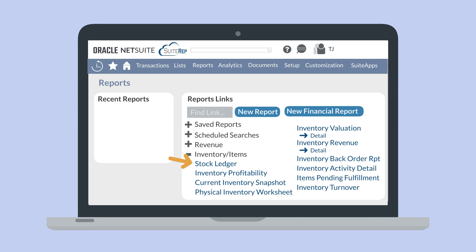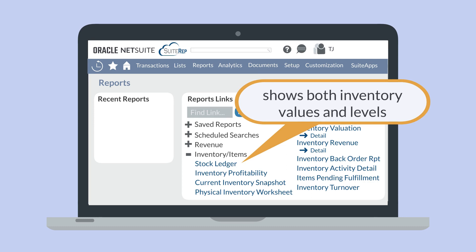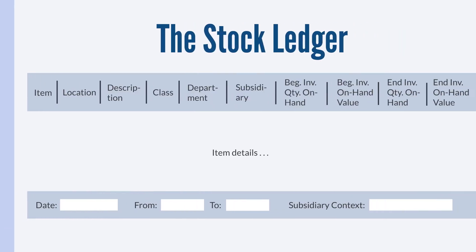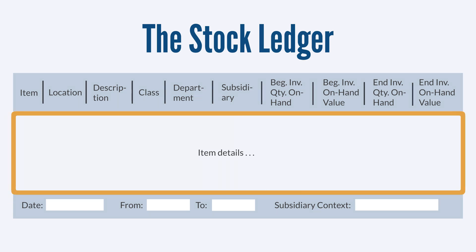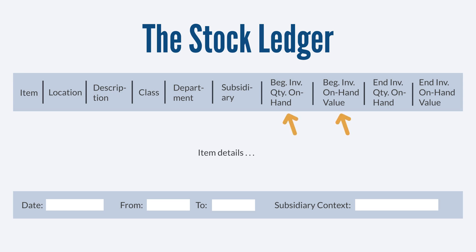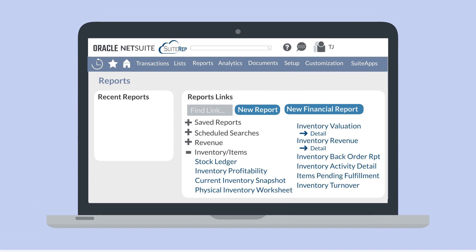First, let's look at the stock ledger. The stock ledger report is important because it's the only report that clearly provides information on both inventory values as well as inventory levels. This report shows the movement of inventory across classes, departments, and subsidiaries over a period of time. On the report, you'll be able to select date ranges and the subsidiary. Then you'll see your list of items in that subsidiary along with information like their beginning inventory quantity and values on hand for the beginning date that you set, and their ending inventory quantity and values on hand for the final date that you set.